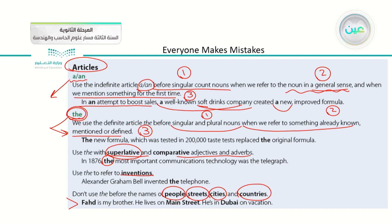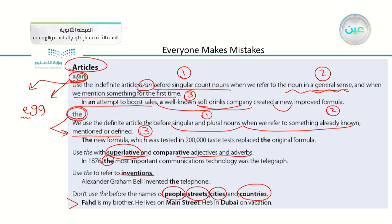Before we go to the next part, remember that we have two indefinite articles: a and an. We use 'an' with any word that starts with a vowel letter. For example, the word 'egg' starts with the vowel letter 'e', so we put 'an' before it: 'an egg'. The five vowel letters are: a, e, i, o, u. Any word starting with one of these five letters takes 'an' before it. For example: an egg, an ink, an orange, an apple, and so on.